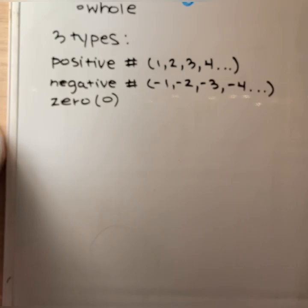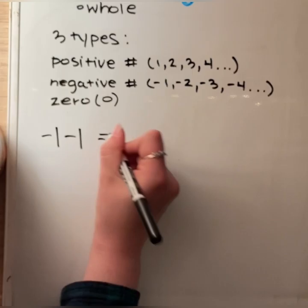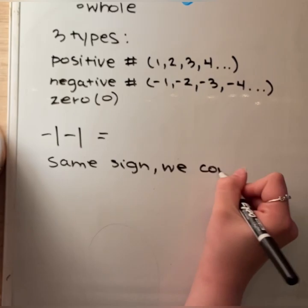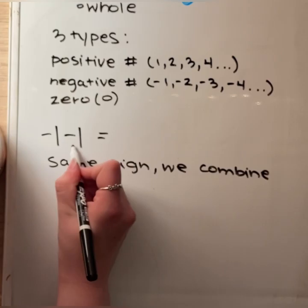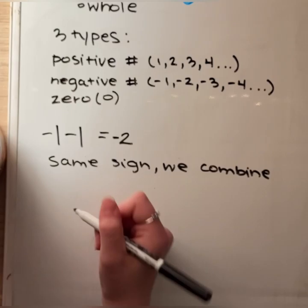We have a couple of different rules when learning about integers. For example, we might see two negative signs. The way I like to remember this is: when we see the same sign, we combine. So since there is a negative 1 and a negative 1 sign, we combine two 1's and get 2, but since they both have a negative sign at the front, we add that negative at the front.